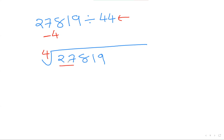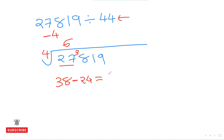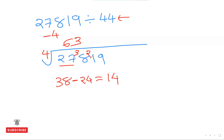Starting with 27: 4×6=24, so quotient digit is 6, remainder 3, giving 38. But 38 isn't my working number — I do 6×(−4)=−24, so 38−24=14. Next, with 14: 4×3=12, quotient digit 3, remainder 2, giving 21. Again, 21 is not my working number — I do 3×(−4)=−12, so 21−12=9.